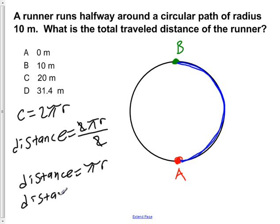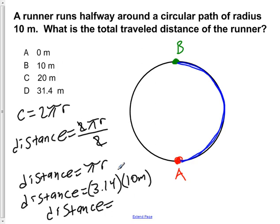Now π, we'll use this form of it just simply being 3.14, and the radius being 10 meters. We can see that the distance that we travel around the semicircle here is going to be equal to 31.4 meters.